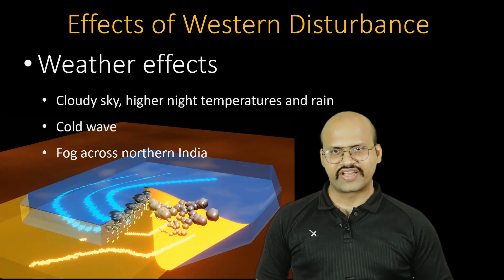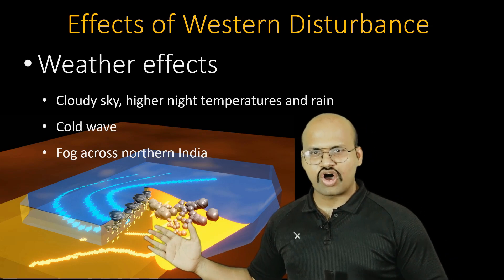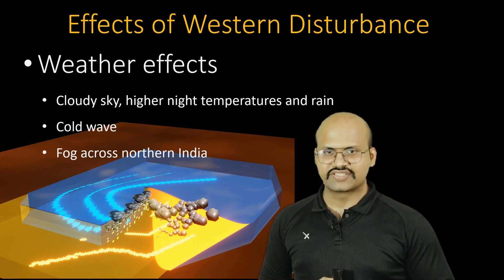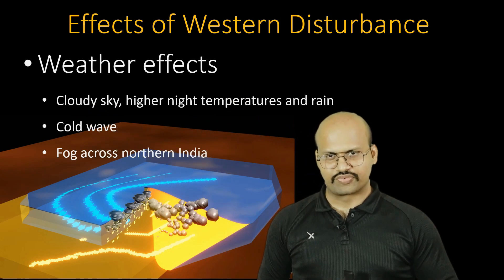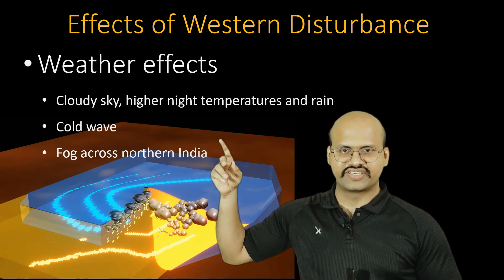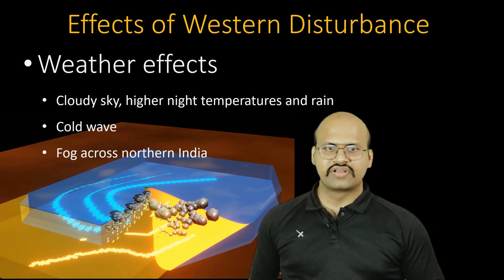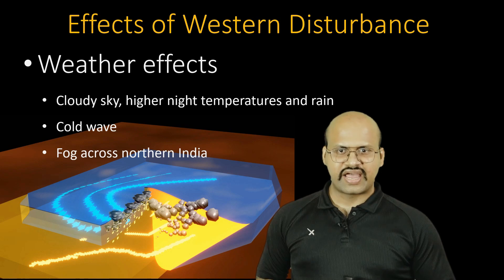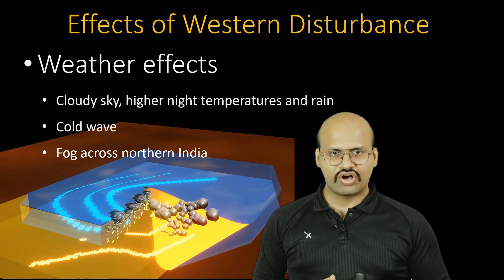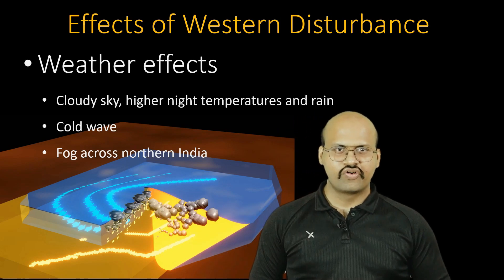The leading edge of the extra-tropical cyclone is a warm front with a very long chain of clouds spread over hundreds or even thousands of kilometers, so we see a cloudy sky when a western disturbance approaches. We also see higher night temperatures because the warm air and cloudy sky trap heat and prevent it from escaping. The rainfall that follows further reduces temperature, causing cold waves.